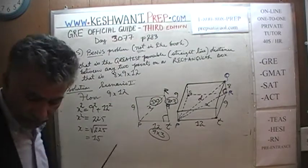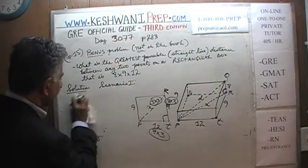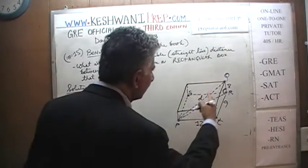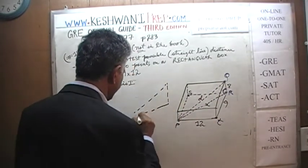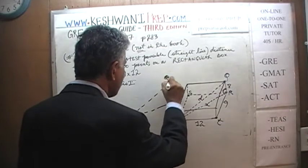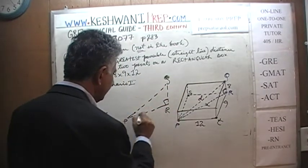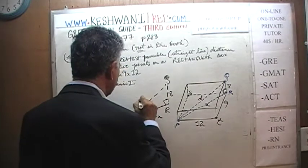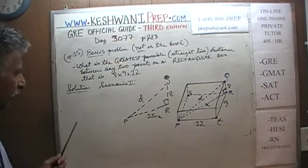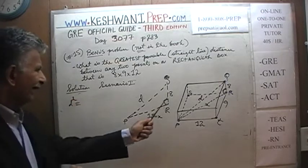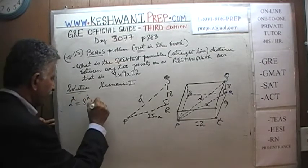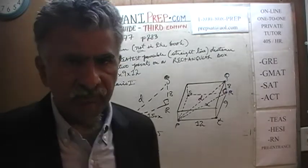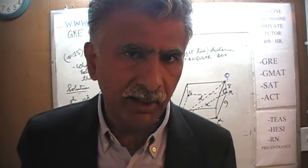We didn't have to do any of that. Anyway, it's 15. Now we know X is 15. Now we're going to look at triangle PQR. This is the right angle. P to R we just found is 15, which is our X. Q to R we know is 8. And now we find the diagonal. D squared one more time is equal to 8 squared plus 15 squared.